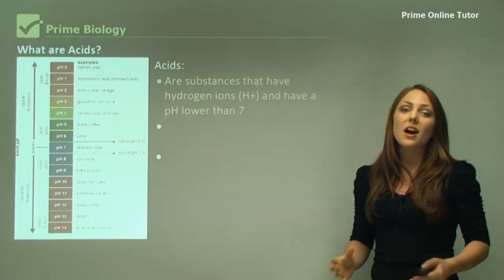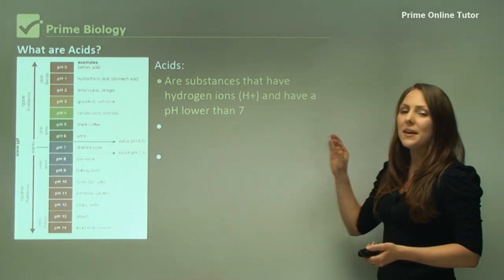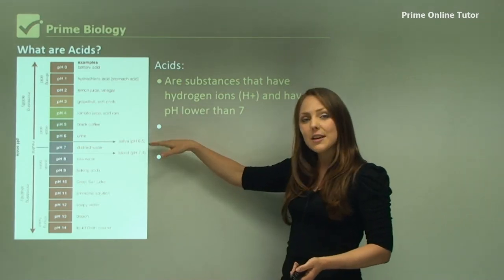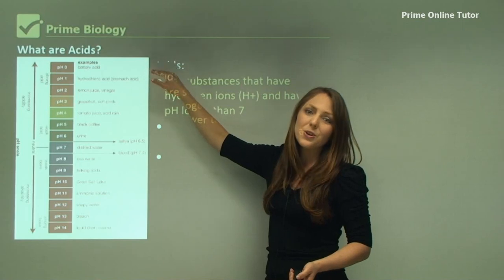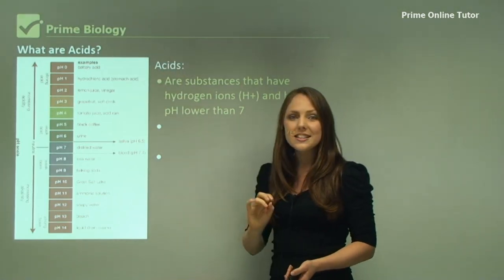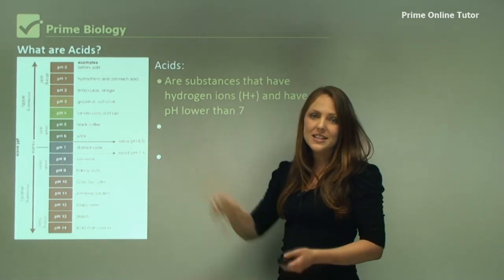Acids - what are acids? They are substances that have hydrogen ions and they have a pH of lower than seven. So on this scale here, pH seven is neutral, so six and all the way down to zero. Zero is the most acidic and six is only slightly acidic.